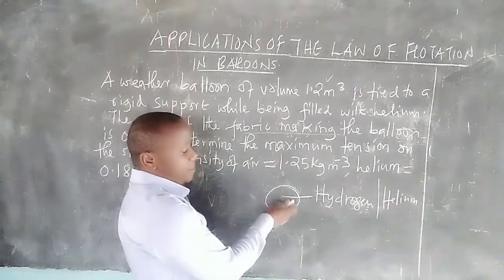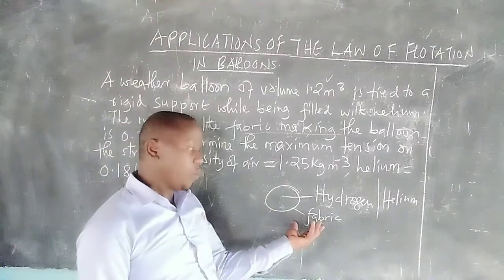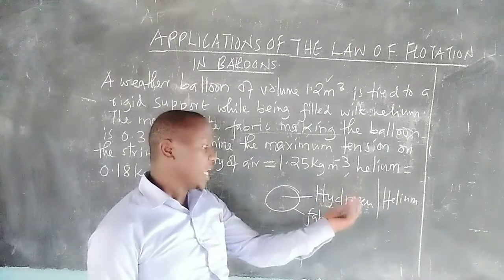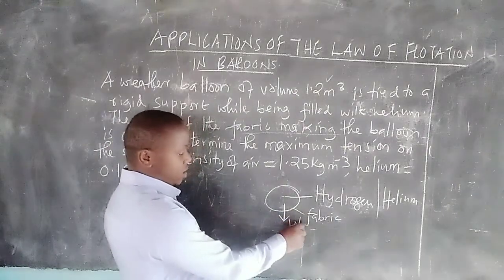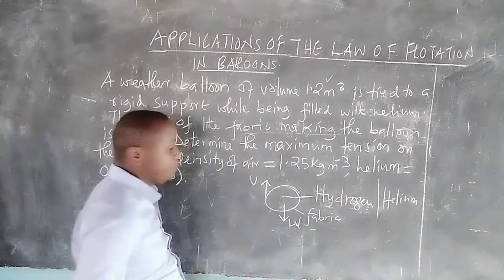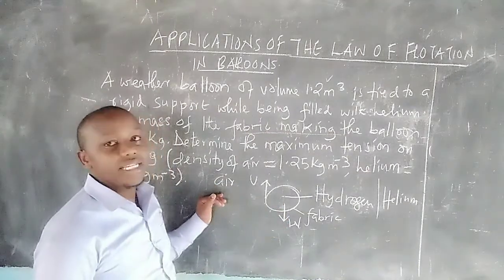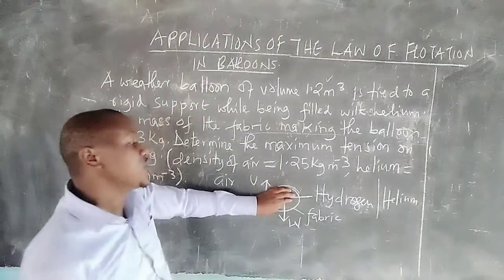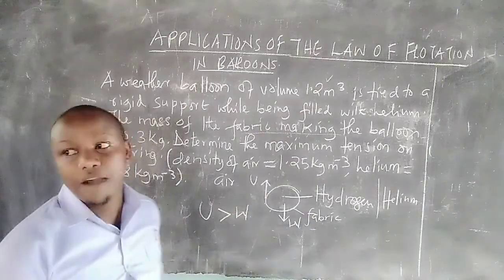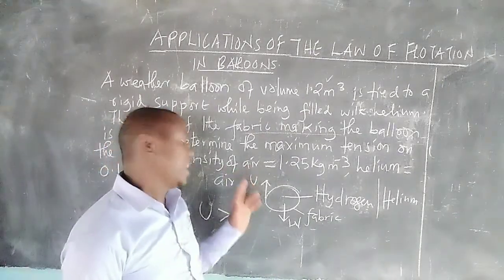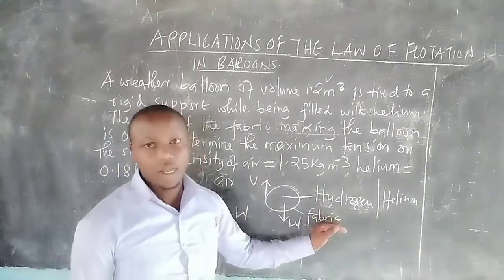The weight of the fabric making the balloon together with the gas — hydrogen or helium — inside the balloon, the total weight acting downwards is very little, and is lesser compared to the upward upthrust force which is due to air. Because air is denser, an equal volume of air weighs more compared to the weight inside the balloon. That is why the upthrust is greater than the weight of the balloon together with its fabric, and the resultant force goes upward. The balloon rises as long as it has been filled with a gas of low density compared to air.